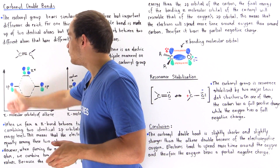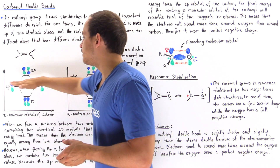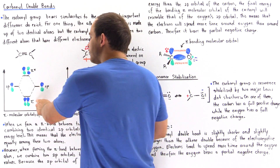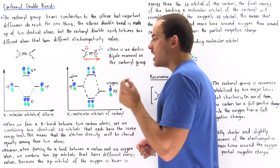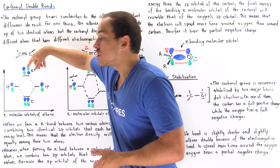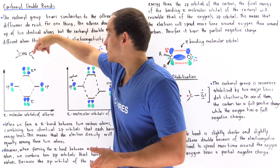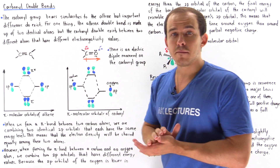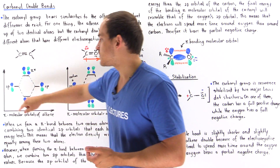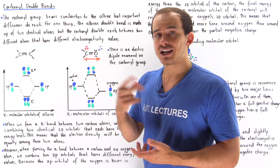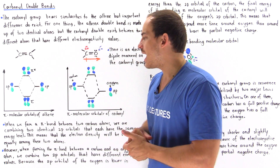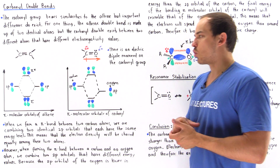On the energy axis, these two 2p orbitals sit on the same exact energy level. When they overlap, they form the lower-energy, more stable pi bonding molecular orbital and the higher-energy, less stable pi antibonding molecular orbital. The two electrons — one from each 2p orbital — end up in the lower-energy pi bonding molecular orbital.